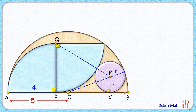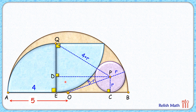This length is the radius r, and OP equals the radius of the semicircle minus r, which is 5 minus r. From point P, let's drop a perpendicular on QE. The length QP equals the radius of the quadrant plus the radius of the circle, so that is 4 plus r. The length DE equals length PC, which is r centimeters, and the full length QE is 4, so QD equals 4 minus r.